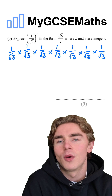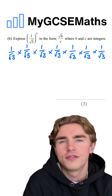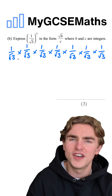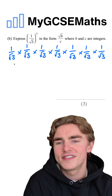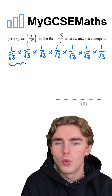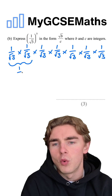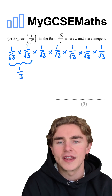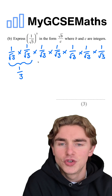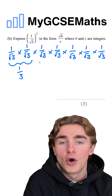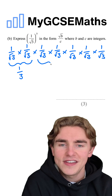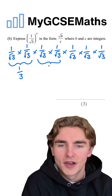1 over the square root of 3 times by 1 over the square root of 3 — on the bottom we're just going to end up with the square root of 9. So we're essentially going to have this being equal to 1 over the square root of 9, which is 1 over 3. We can pair up each of our pairs of two: 1 over root 3 times 1 over root 3, to get three sets of this.